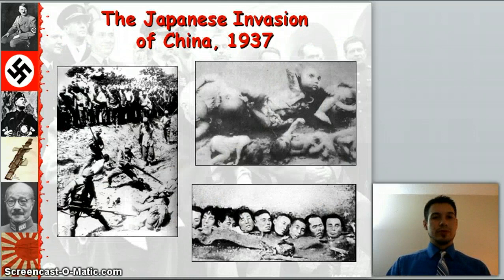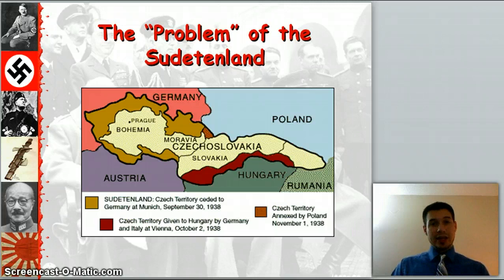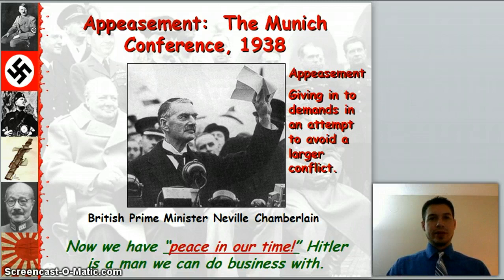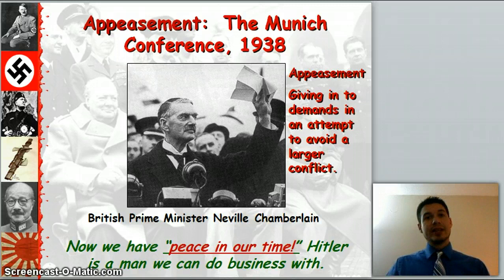Now we have a problem with the Sudetenland. The Sudetenland is a land in Czechoslovakia where there are a lot of Germanic people. Hitler believes in Anschluss — meaning that all of these Germanic people need to reunite, including Austria and including the Sudetenland. So Hitler goes and takes his army and takes it. However, the Prime Minister at the time of Britain, Neville Chamberlain, says we have peace in our time. He appeases Hitler during the Munich Conference — he gives in to his demands in order to avoid a larger conflict, and gives Hitler the Sudetenland.